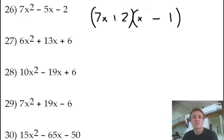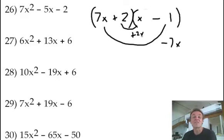I'm going to put the negative there, the positive there. So when I do the OI bit, see, there's negative 7x. There's positive 2x. That gives me the negative 5x. So that there is the answer.